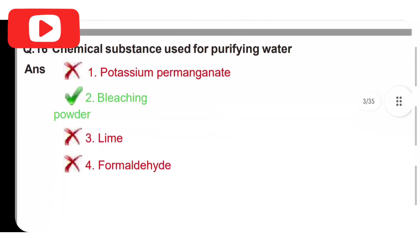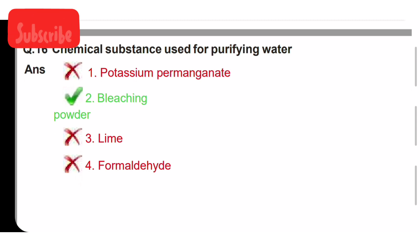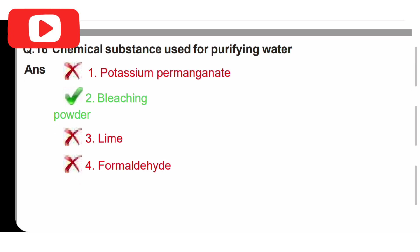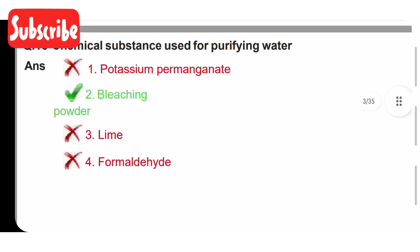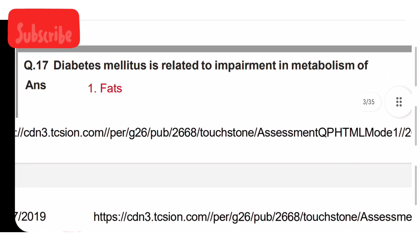Chemical substances used for purifying water: option one is potassium permanganate, option two is bleaching powder, option three is lime, option four is formaldehyde. Bleaching powder is the chemical substance used for purifying water. Option two is correct.